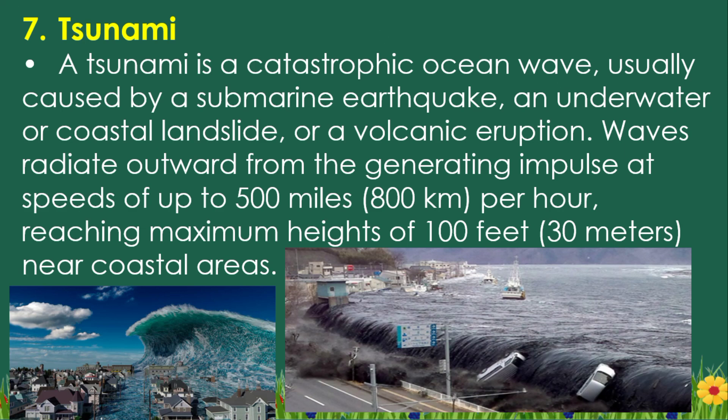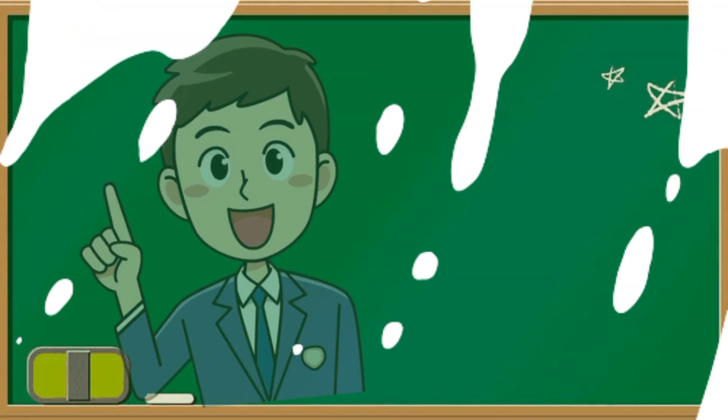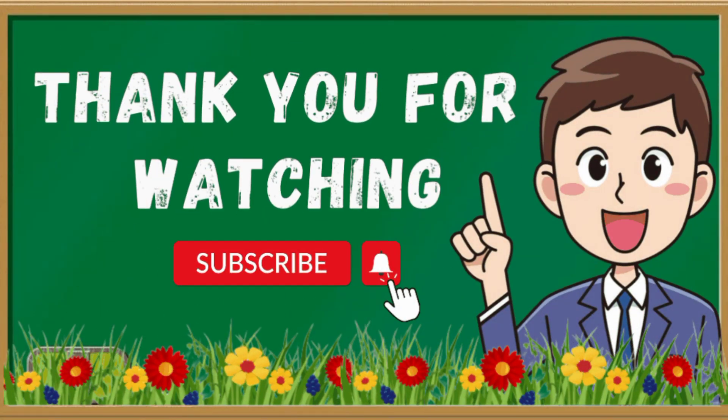Type 7: Tsunami. A tsunami is a catastrophic ocean wave usually caused by a submarine earthquake, an underwater or coastal landslide, or a volcanic eruption. Waves radiate outward from the generating impulse at speeds of up to 500 miles (800 kilometers) per hour, reaching maximum heights of 100 feet (30 meters) near coastal areas.